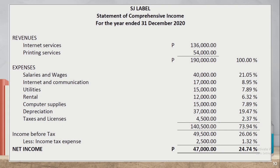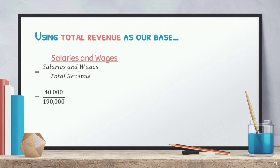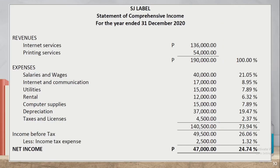Next, moving to the statement of comprehensive income. Here, our baseline item is total revenues — so total revenues equals 100%. To get the vertical analysis for salaries and wages using total revenue as our base: salaries and wages of 40,000 divided by total revenue of 190,000 gives us 0.2105 × 100 = 21.05%.